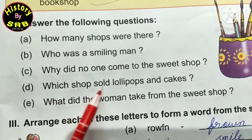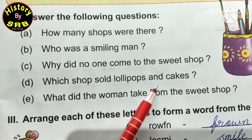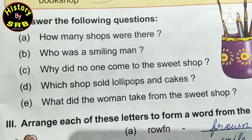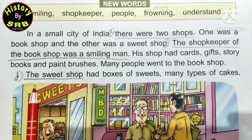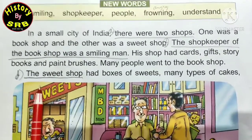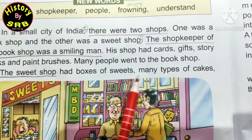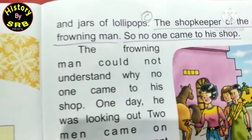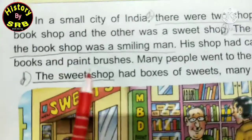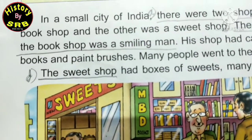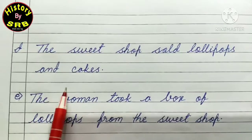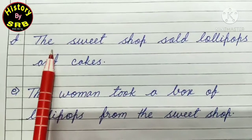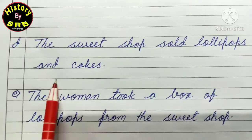Question D: 'Which shop sold lollipops and cakes?' - kaun se dukan mein lollipop bikta tha? Answer pehle page mein diya gaya hai: 'The sweet shop had boxes of sweets, many types of cakes and jars of lollipops.' To aap likhoge - 'The sweet shop sold lollipops and cakes.' Aise apni copy mein likh lenge.